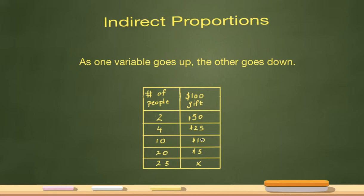Contrary to what a direct proportion is, where when one number goes up the other number goes up as well, in an indirect proportion when one variable or one number is going up, the other one's going down.